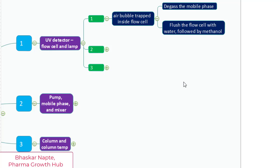Reverse flushing of the flow cell is also a good idea where you can reverse the connection of the flow cell and change the direction of the solvent coming inside the flow cell.